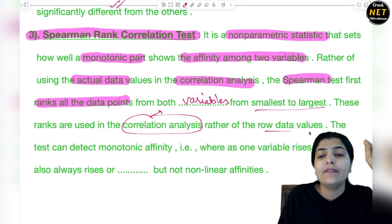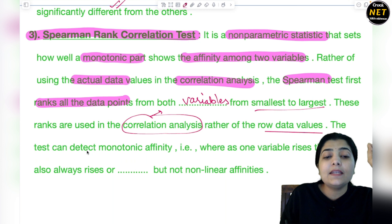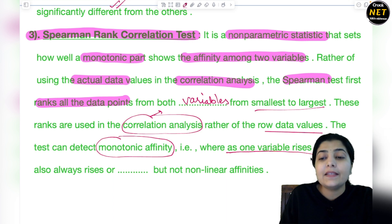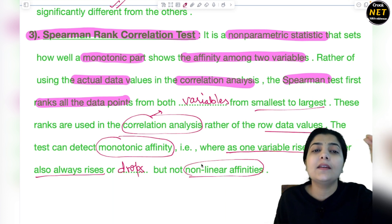The test can detect monotonic affinity, where as one variable rises, the other also always rises, or drops. But not non-linear affinities - it happens in linear, not in non-linear.